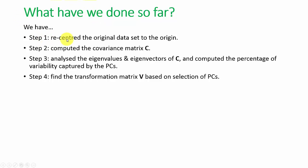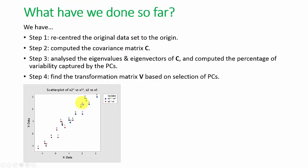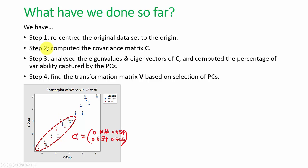At step 1, we re-centered the original dataset to the origin. The blue color is the original dataset. All we did was shift the whole dataset such that the center is now at (0, 0). The red data points are the new, shifted, and re-centered dataset. In step 2, we computed the covariance matrix C, which represents the variability of the bivariate data. It does not matter if C represents the red or blue data points because they are distributed in the same shape — only the center is different.